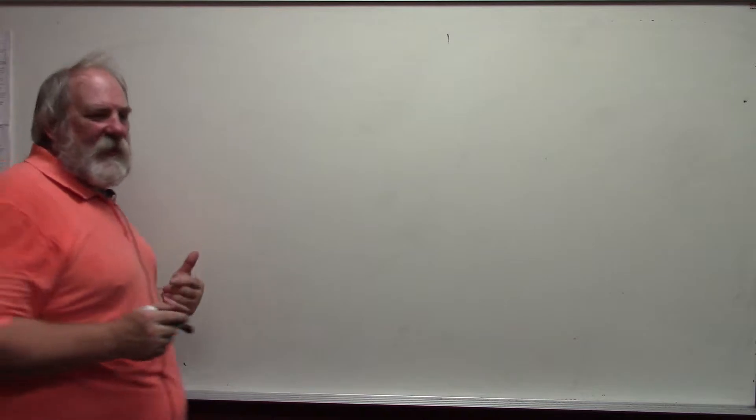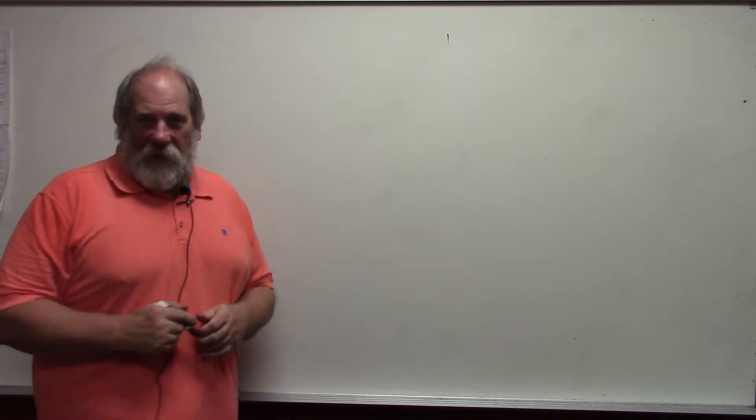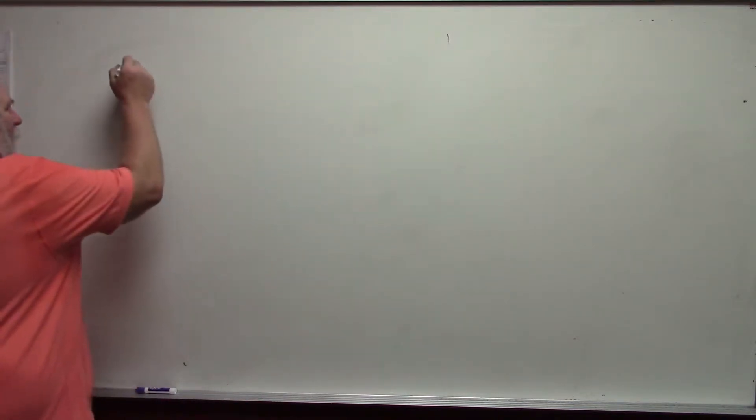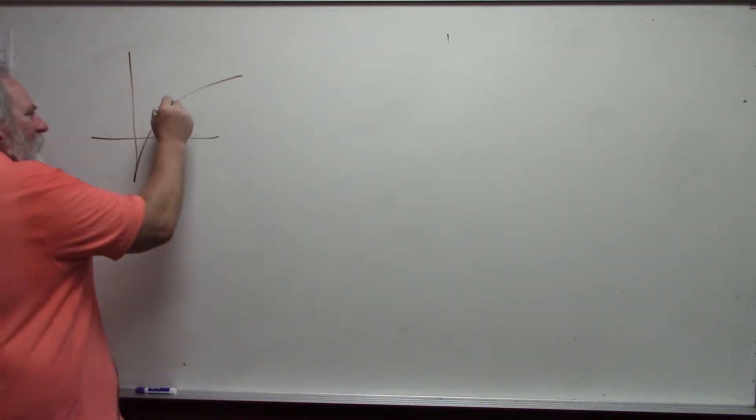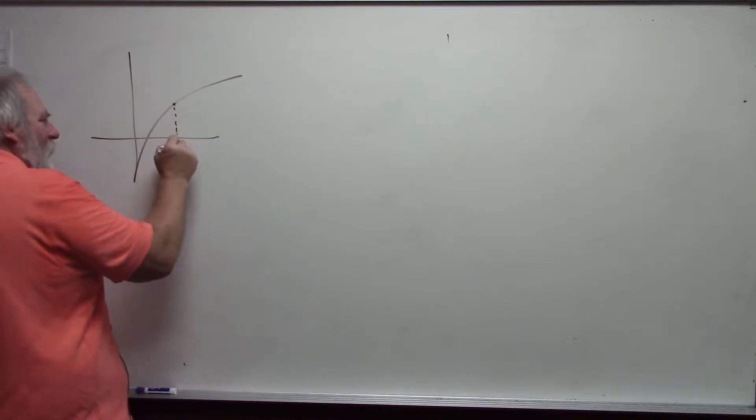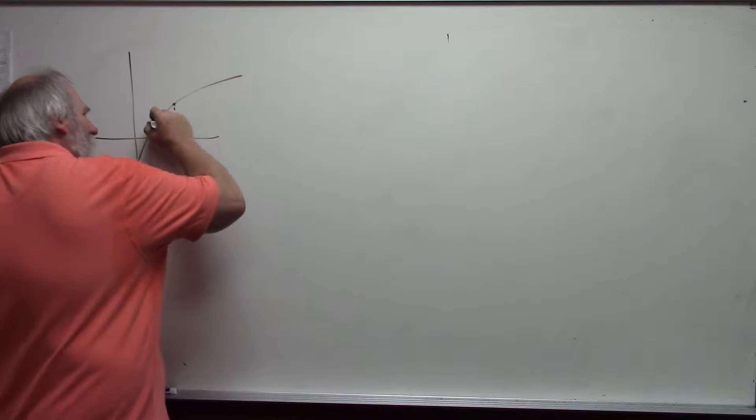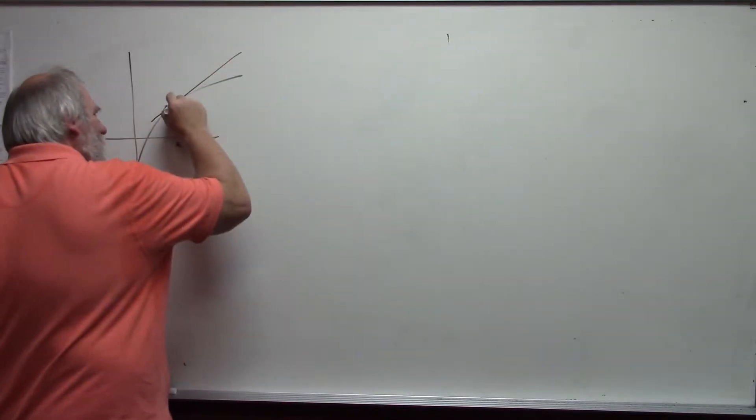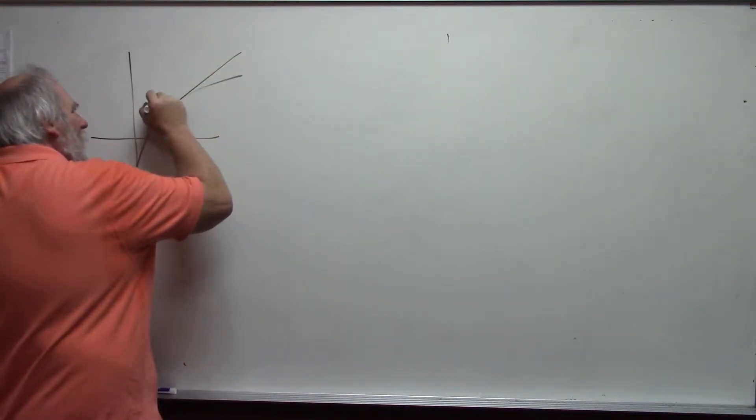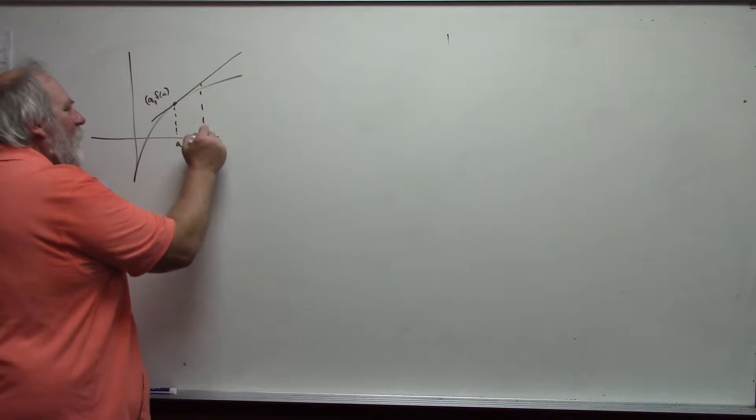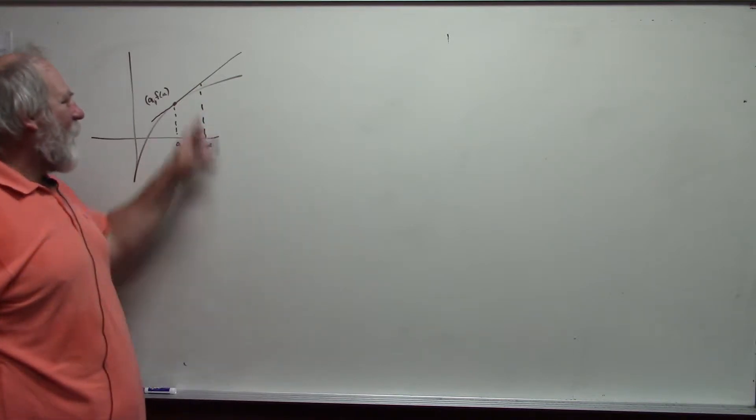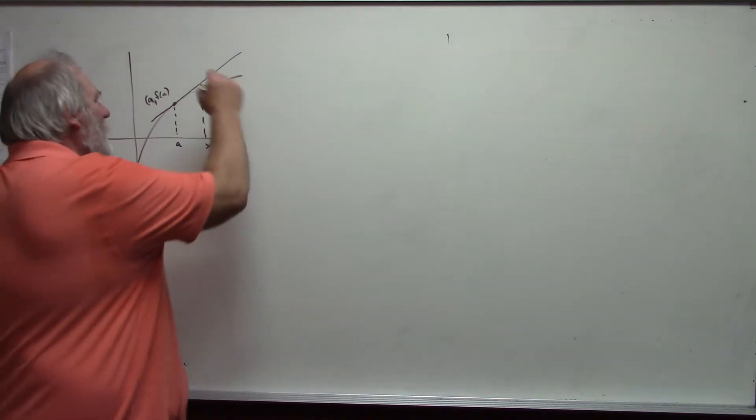Hello, today's video involves linear approximation and differentials. The idea is if I have a function at some point a, we consider the tangent line. This then is the point a comma f of a. Well, I can approximate the value of the function at some x by looking at the tangent line, the value on the tangent line.